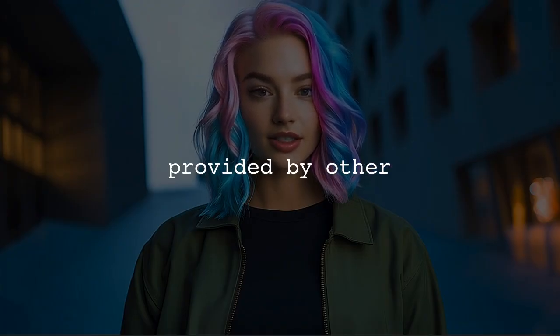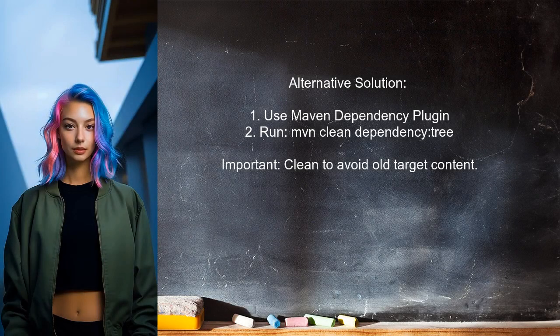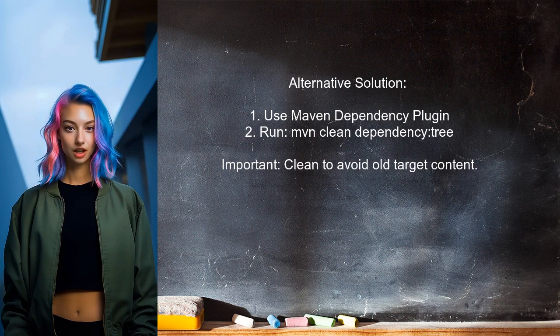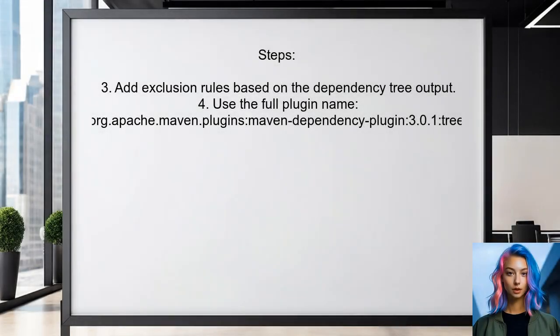An alternative approach to avoid the overlapping classes warning is to use the Maven dependency plugin. First, run the command to clean and display the dependency tree — this helps identify any conflicts. Next, based on the output, you can add exclusion rules to your configuration to prevent those warnings. Make sure to specify the correct version of the plugin to avoid compatibility issues.